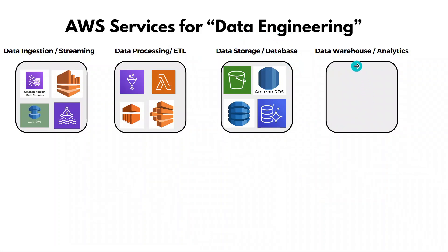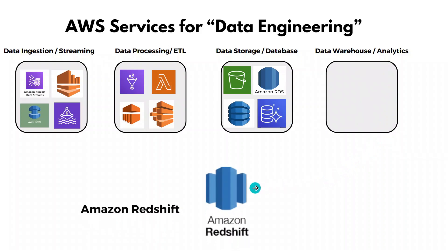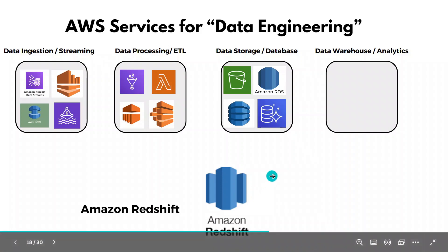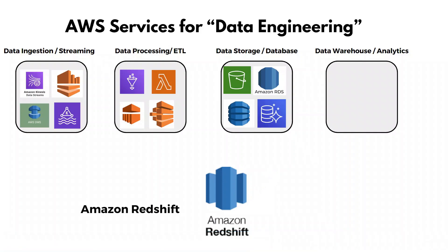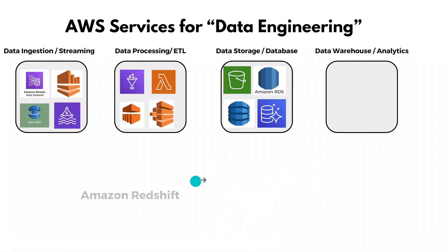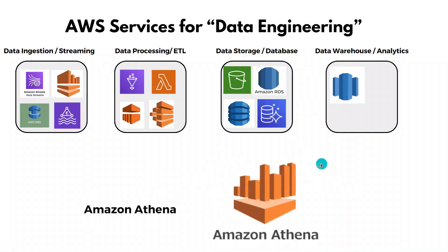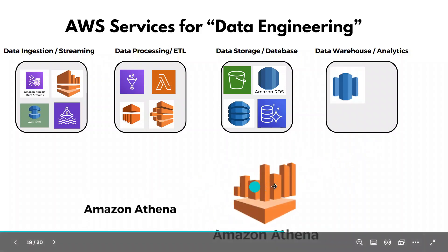The next category is data warehousing and analytics. The most important AWS service for data warehousing is Amazon Redshift, a very widely used warehouse service that provides a fast and efficient way to analyze and query huge amounts of data.